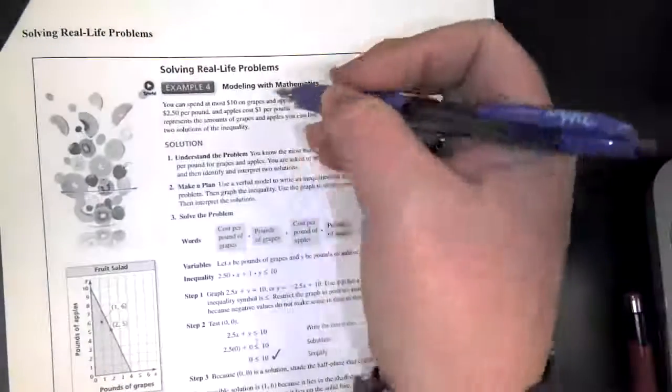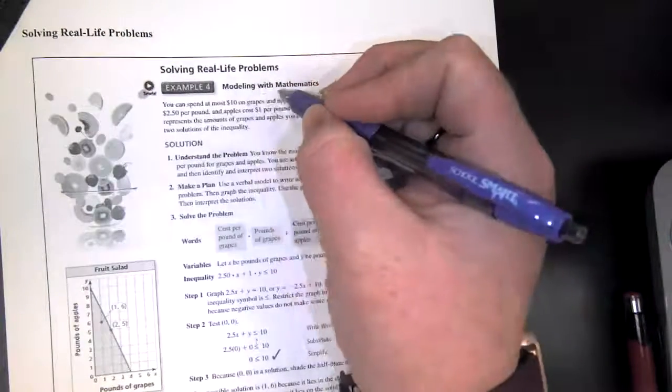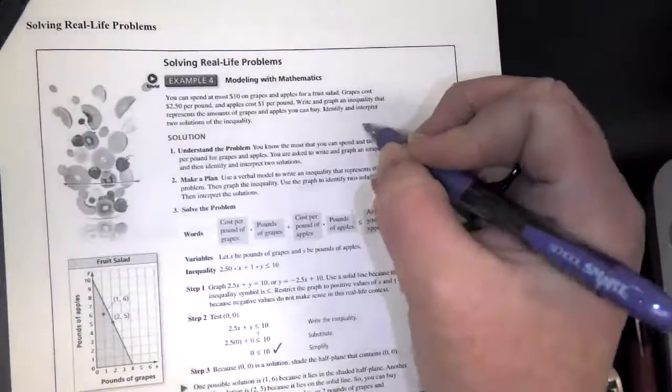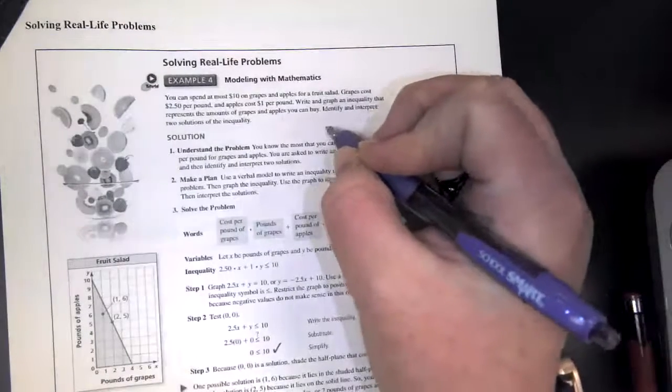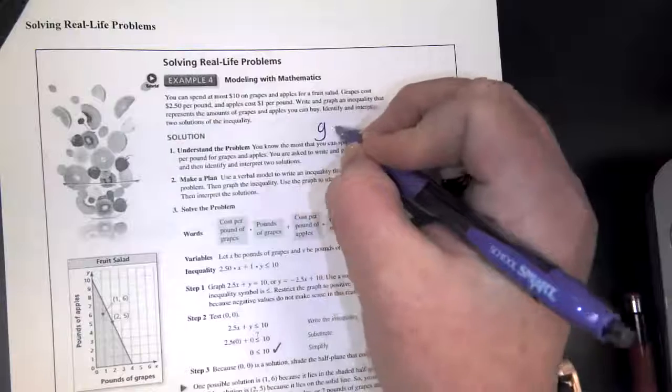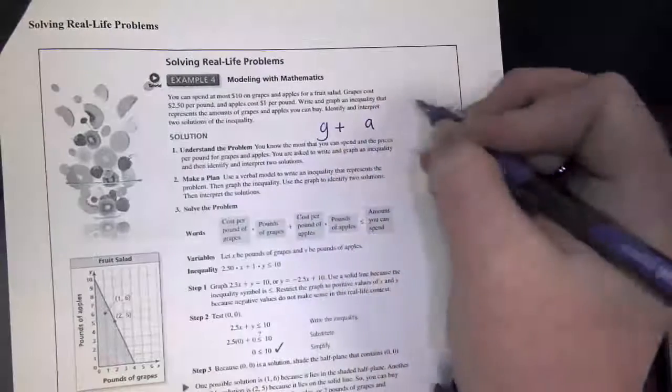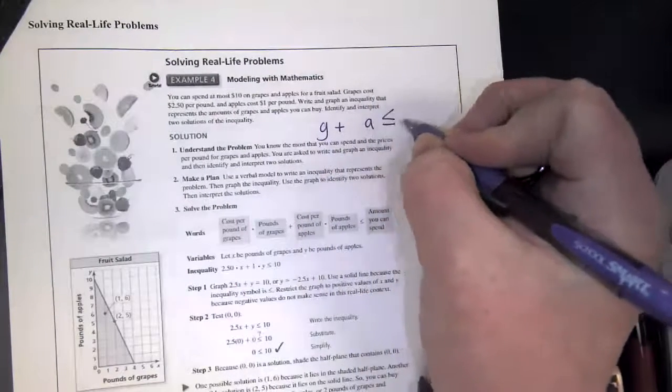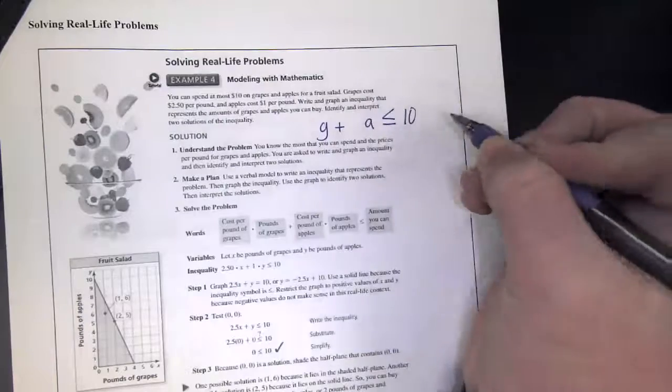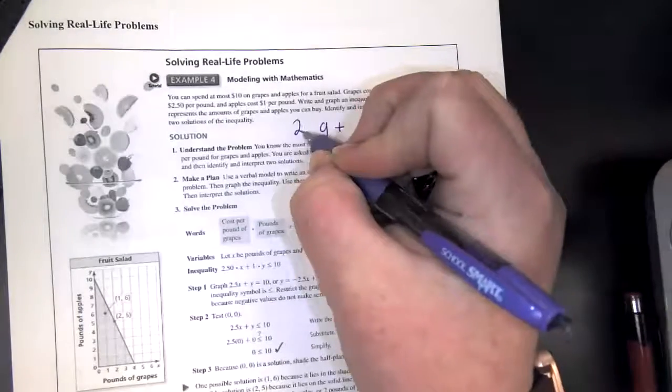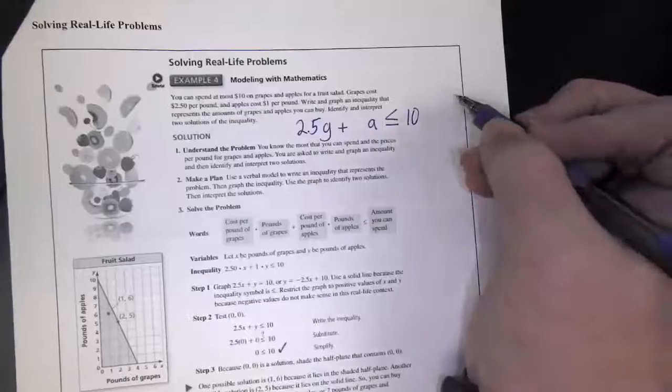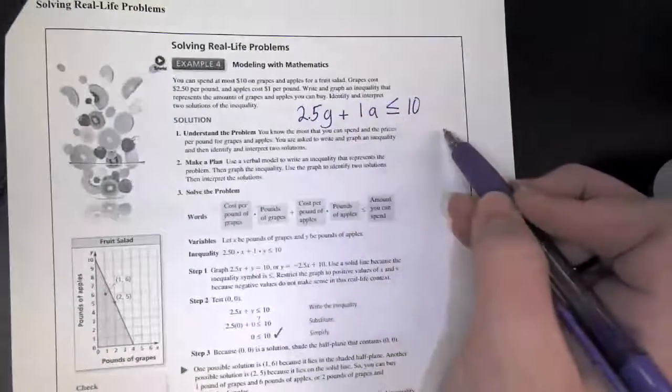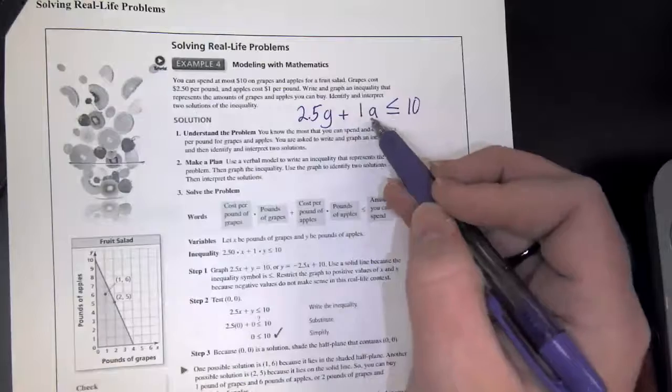So zero plus two times zero is greater than two. So this is zero is greater than two. Is that true? That would be a no. Ooh, so I can't shade the no side. I have to shade the opposite side. Okay. Now, if you wanted convincing that this side is the side that you want, all you'd have to do is pick out a point in here and test it.